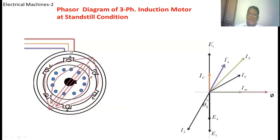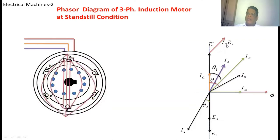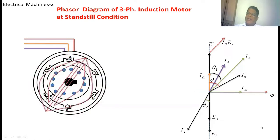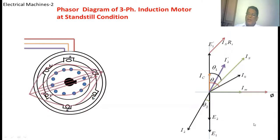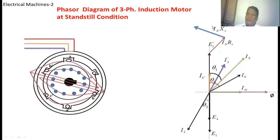When this stator current IS passes through the stator winding, the stator winding has two parameters: one is the resistance and another is the leakage reactance. For the voltage E1-dash, if we add the resistance drop IS·RS — where RS is the per-phase resistance of the stator winding and IS is the stator current — we draw IS·RS from the end of E1-dash, parallel to IS. The stator winding also has leakage reactance, causing a voltage drop J·IS·XS, drawn perpendicular to IS·RS.